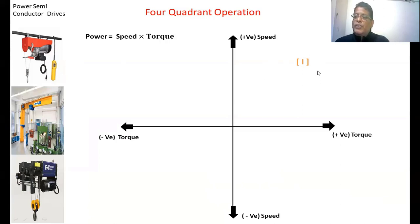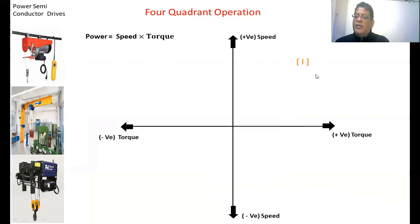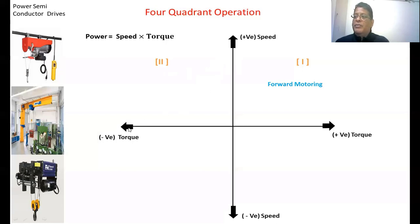In the first quadrant operation, speed is positive and torque is positive, so power becomes positive. The first quadrant represents forward motoring. In the second quadrant, speed is positive whereas the torque is negative.